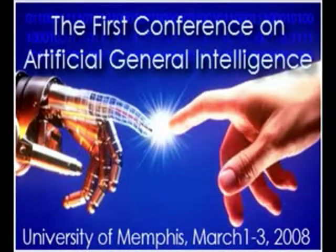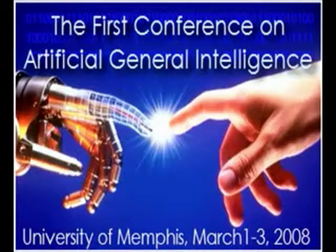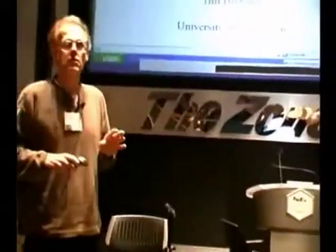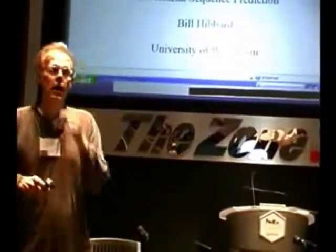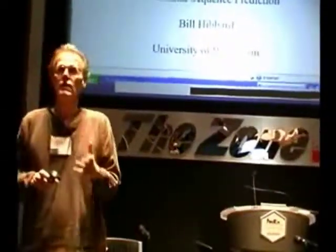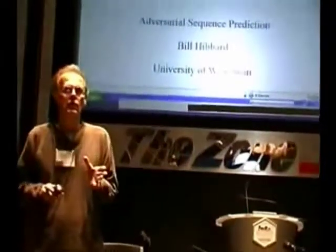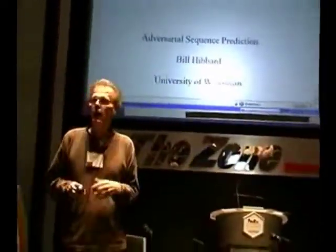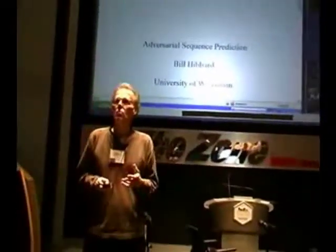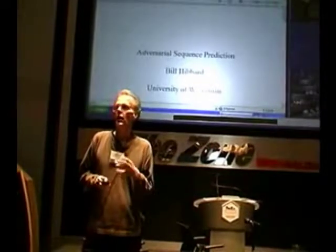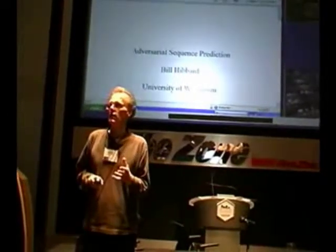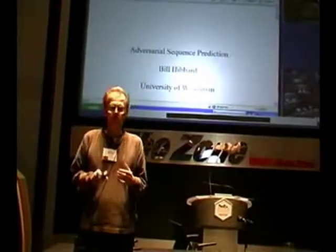I'm going to talk about adversarial sequence prediction. Pewter and Legg are doing some interesting work in coming up with mathematical formalisms for defining and measuring intelligence. This is closely related to sequence prediction. Legg has a more recent paper which asks: is there an elegant universal theory of prediction?